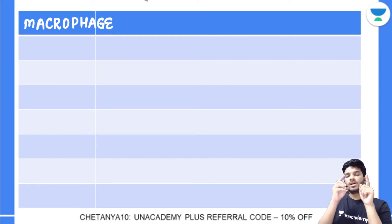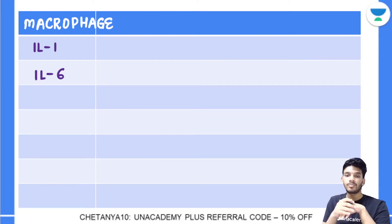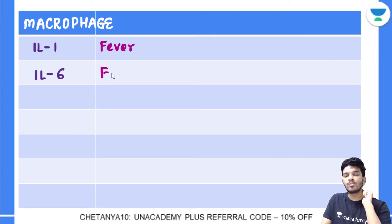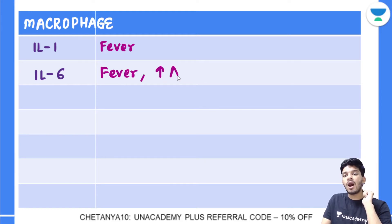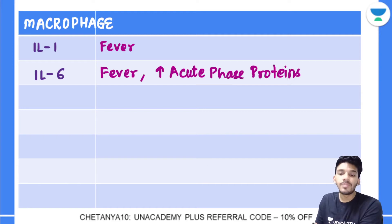When the macrophage gets activated, two very important ones are Interleukin-1 and Interleukin-6. You've definitely heard of them, especially with COVID-19 and the cytokine storm, where Interleukin-6 plays a main role. Both of these cause fever and are pro-inflammatory. Interleukin-6 also increases acute phase proteins, which is the basis of many COVID lab tests.